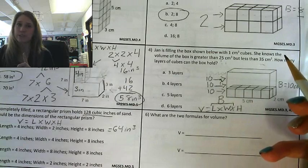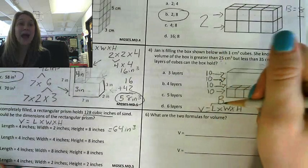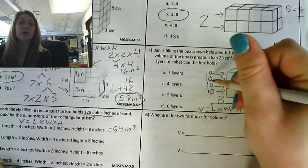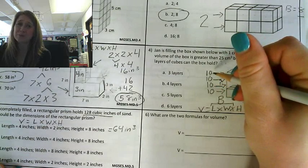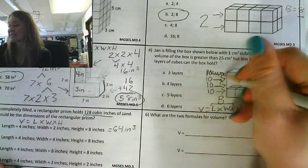But I'm going to go ahead and add one more just to make sure. So if I add another layer of 10, now my volume will be 10, 20, 30, 40. Ooh, that's too big because it's got to be less than 35. So I cannot add that last layer.